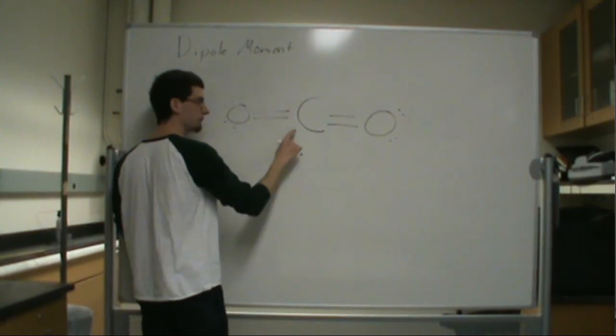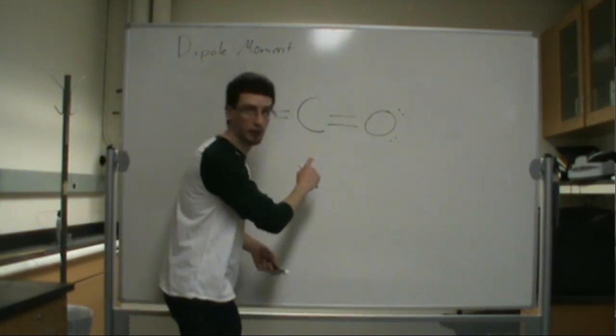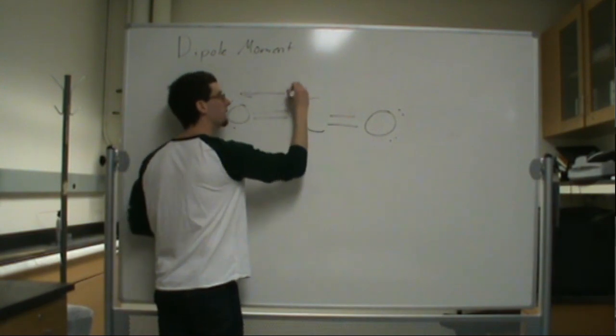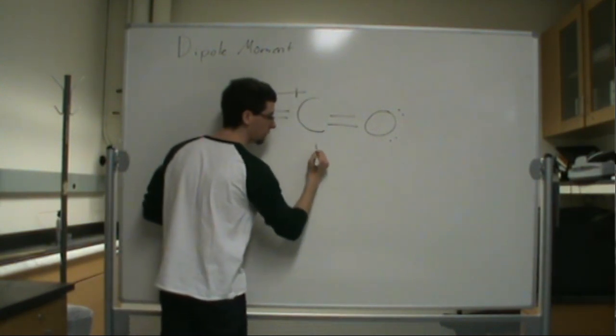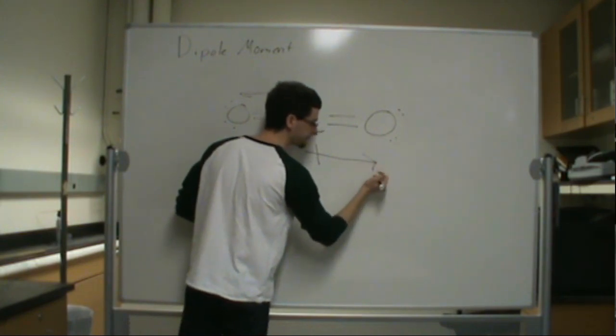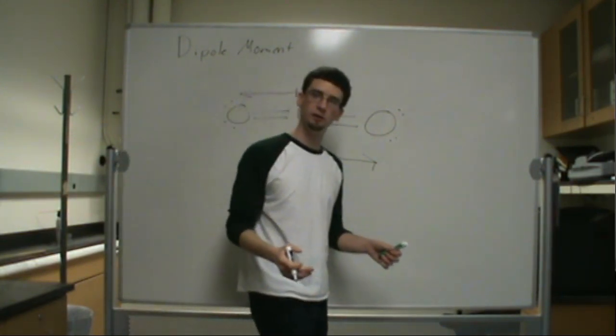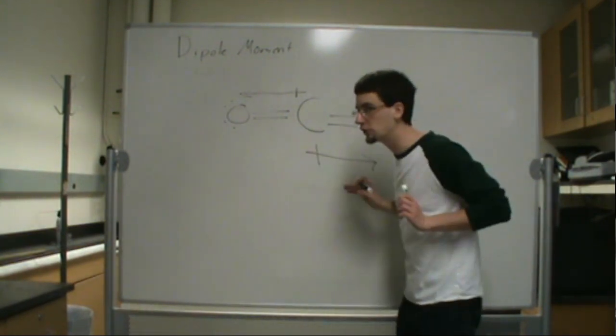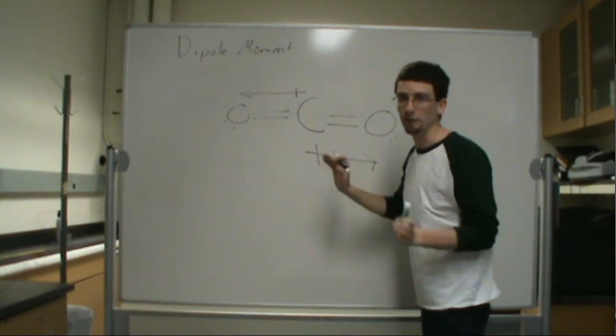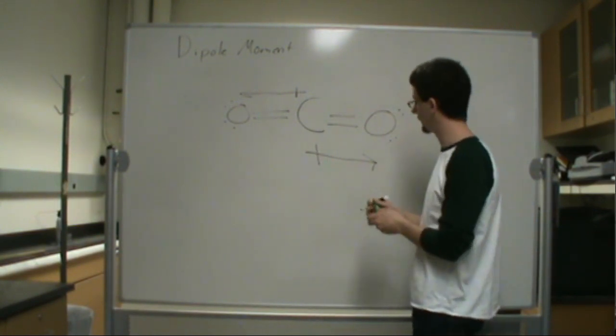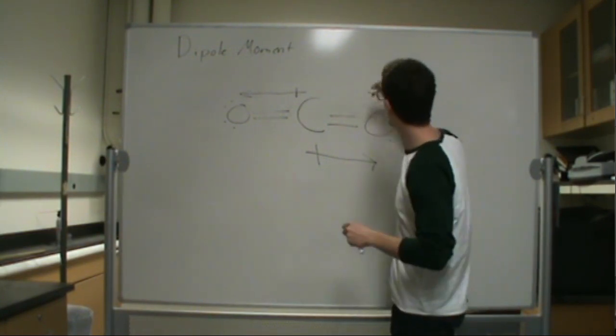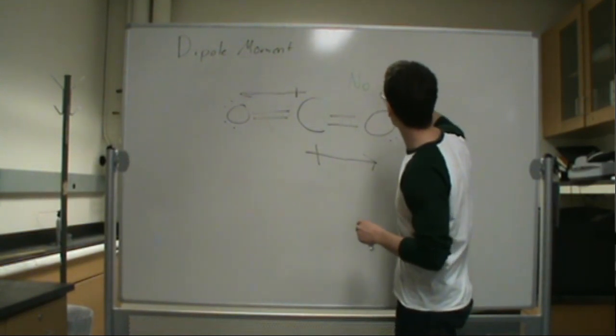So, let's draw our bond dipole moments. If we notice, it should be pointing from the carbon to the oxygen. Oxygen is more electronegative than carbon. So, there should be a dipole pointing that way. And then, we should also have a dipole pointing in this direction. Now, if you look, these dipoles are equal, but they're opposing. It's like if I have my clone, and we're both pushing on one another, we're not going to move anywhere because we have the same amount of strength. So, for this, there's an overall dipole moment of zero. There is no dipole moment for this molecule. So, no dipole.